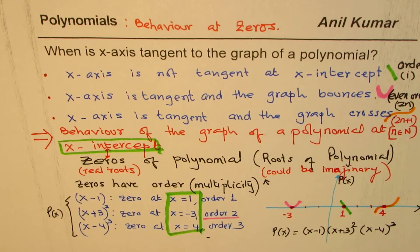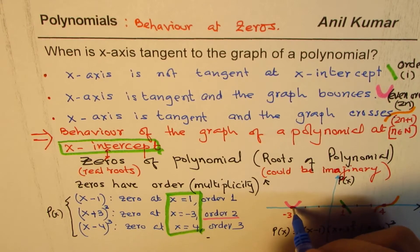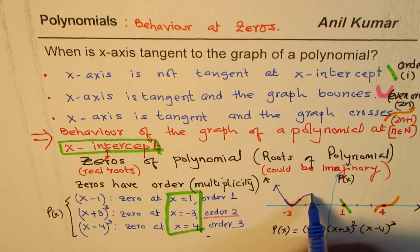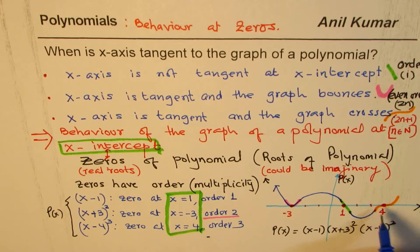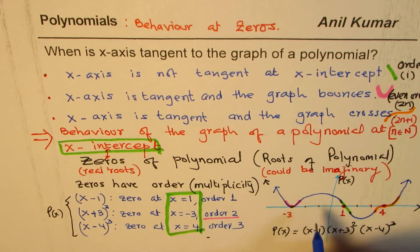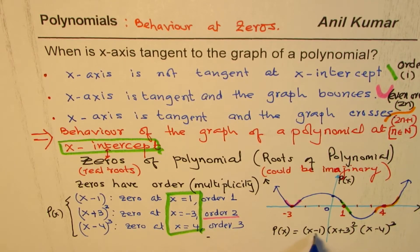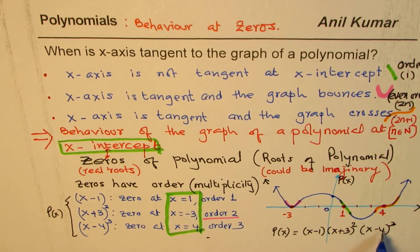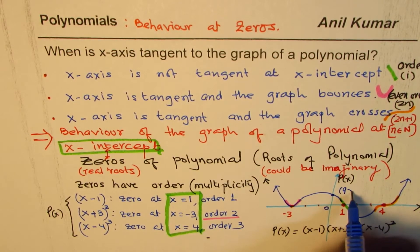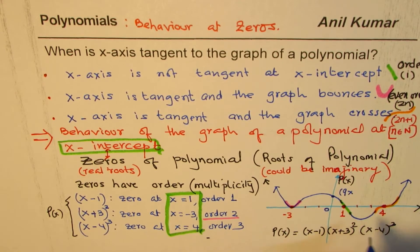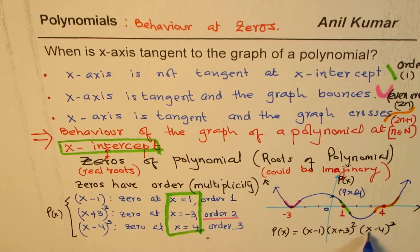We can now combine all of these behaviors to sketch a neat graph of p(x), connecting the behavior at each zero. For the y-intercept, place x = 0: we get (−1)(3²)(−4)³ = (−1)(9)(−64) = 576. So the y-intercept is a large positive number, which we can mark on the graph.